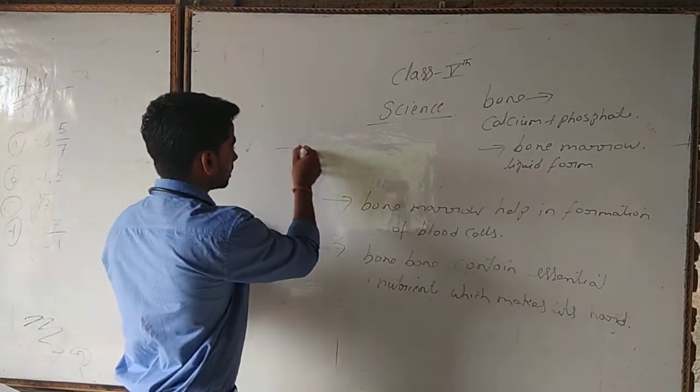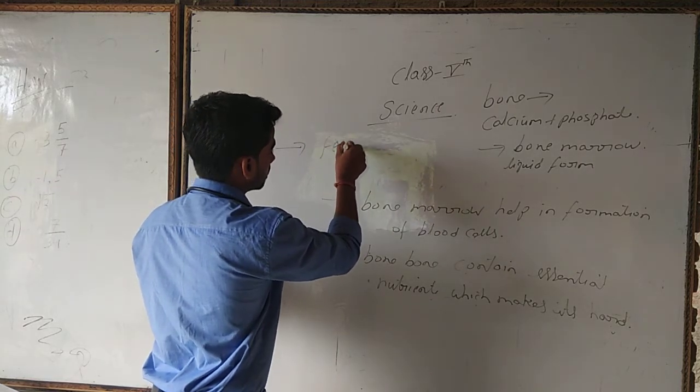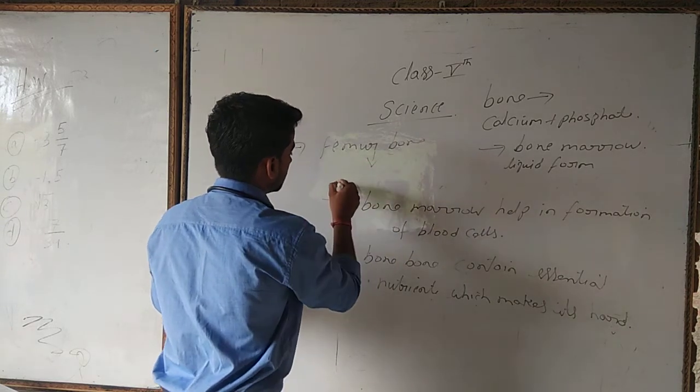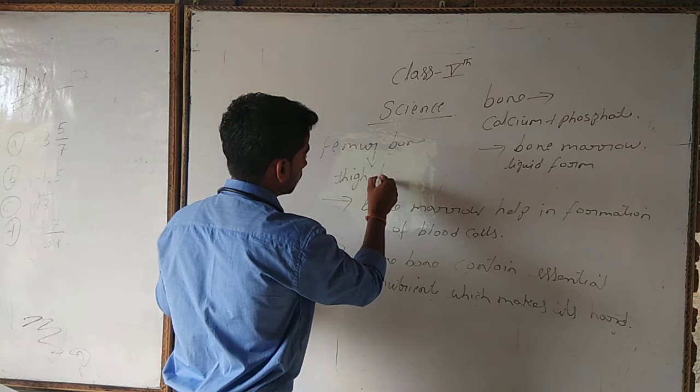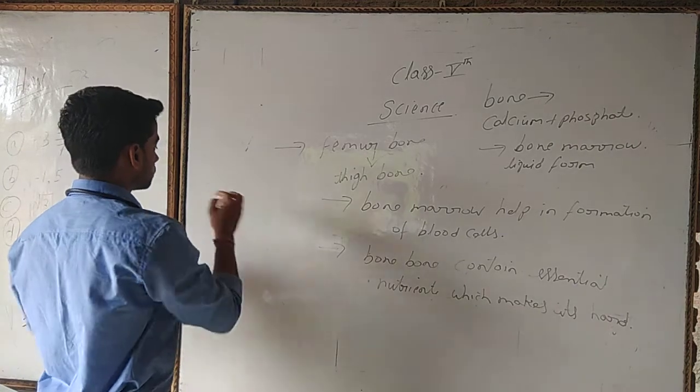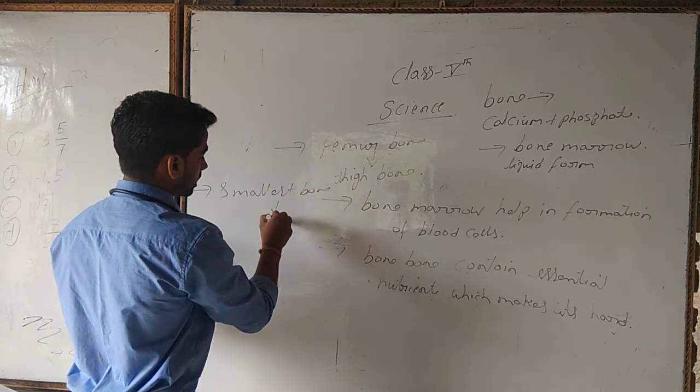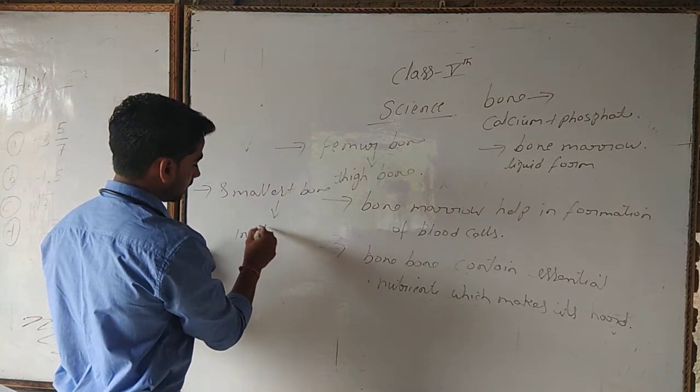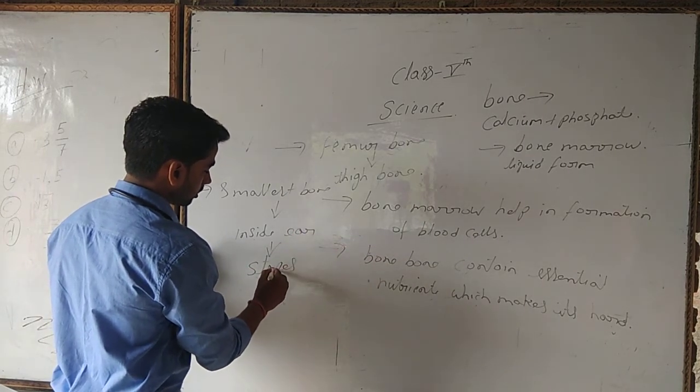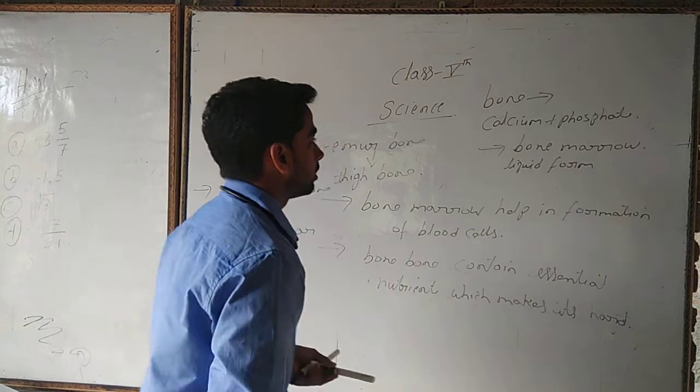One important fact about bone: the longest bone in our body is the femur, which is found in the thigh and is also called the thigh bone. And the smallest bone in our body is found inside the ear, which is called the stapes, or sometimes it can be called by other names. This is all about bone.